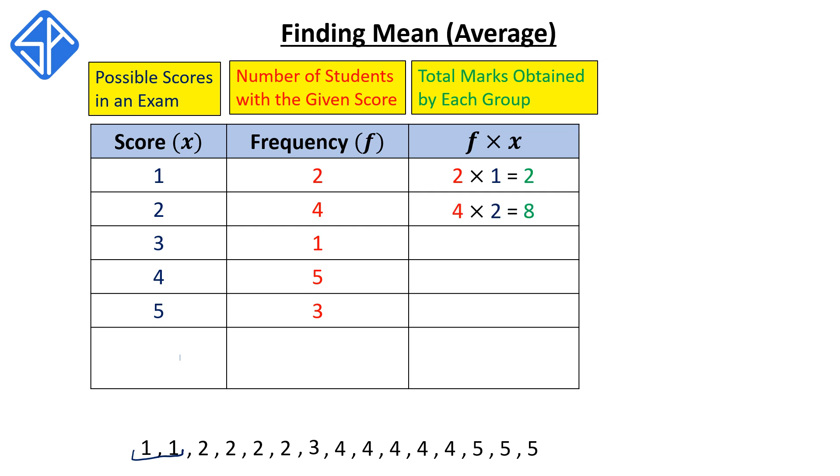Next, 4 times 2 is equal to 8. This means that the next four students contribute a total mark of 8 to the class. Then we've got 1 times 3 is equal to 3. This one student contributes a total mark of 3 to the class.